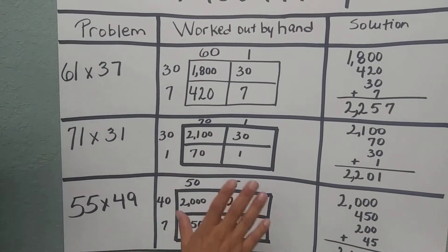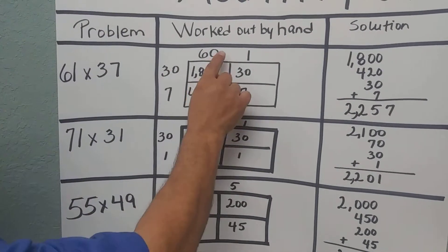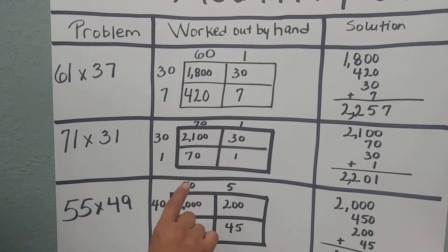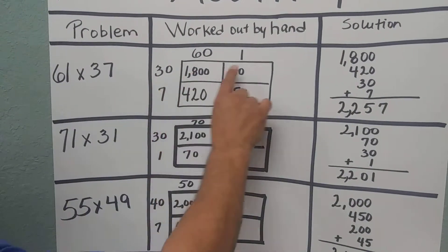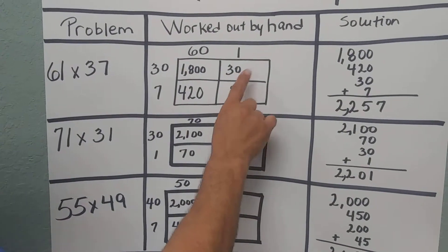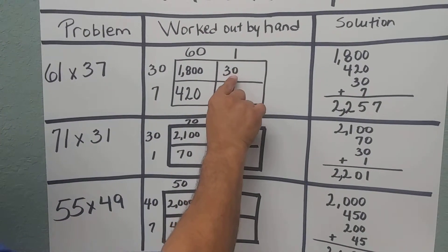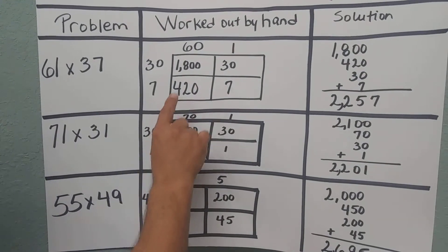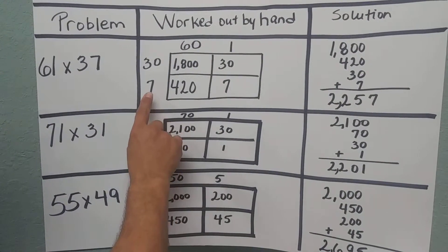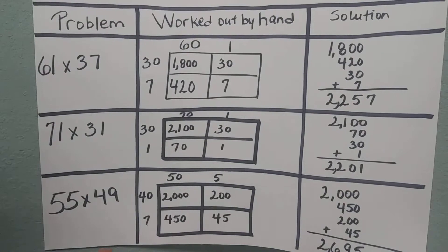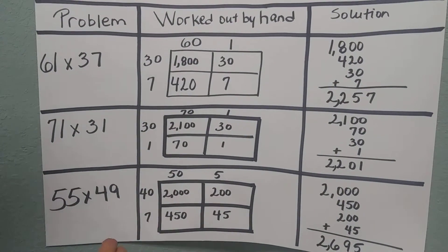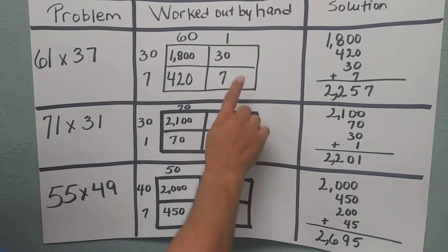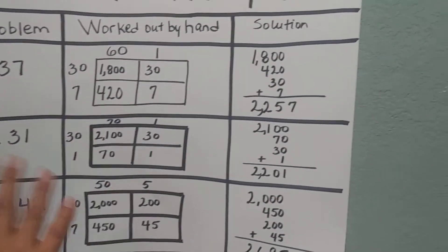Our next step is to add 30 times 60, which gives us 1,800. Then we multiply 30 times 1, which gives us 30. Going down on the left-hand side, 60 times 7 is 420. Then we have 7 times 1, which gives us 7.